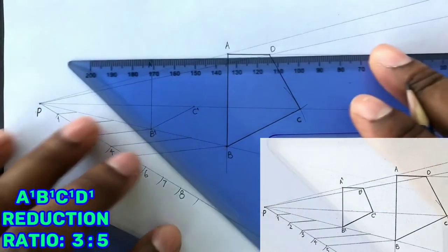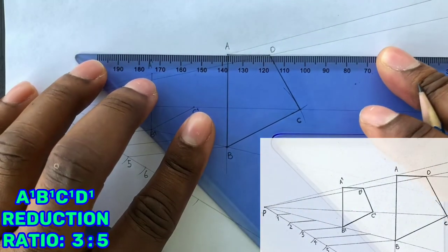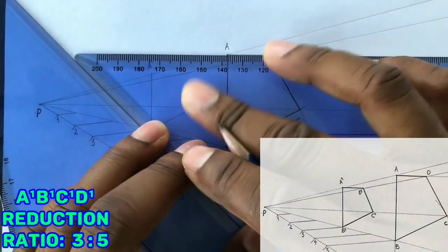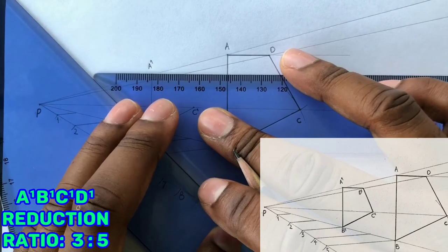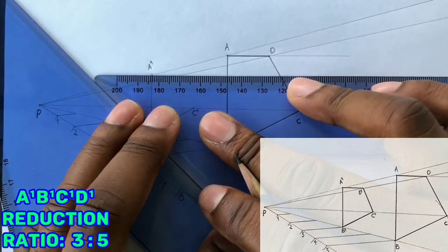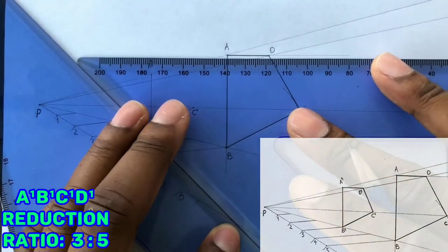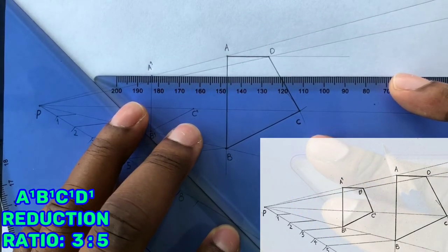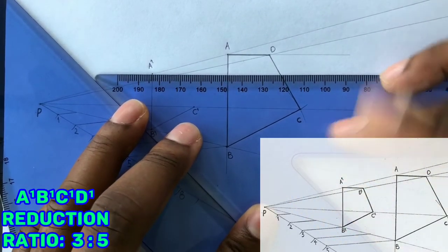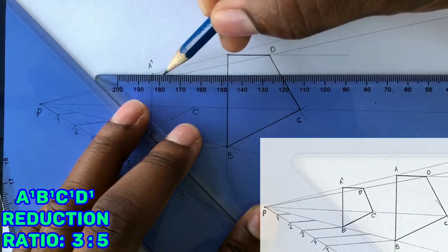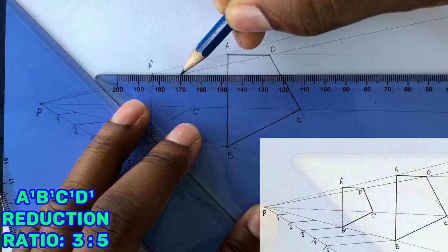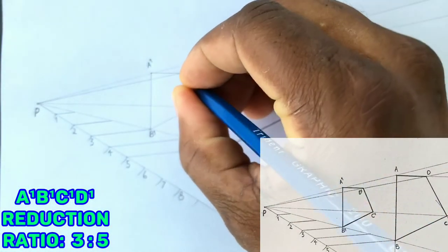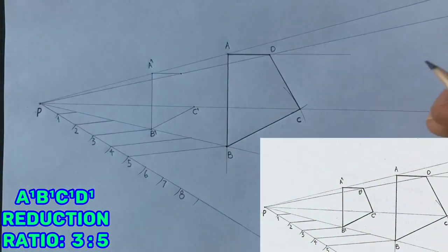You will now use your two set squares to draw a parallel line to AD from point A1. Remember the set square in your left hand must not move. It is stationary. Now label the previous intersection as D1.